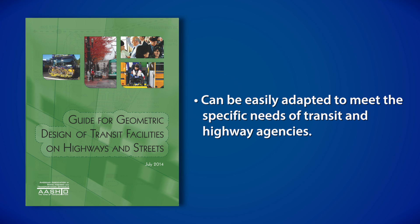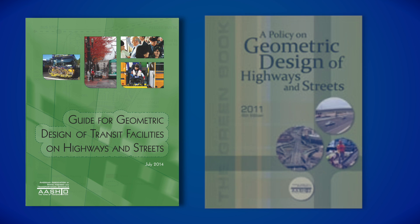The guide is intended to be used in conjunction with the AASHTO publication, A Policy on Geometric Design of Highways and Streets, 6th Edition, which is commonly referred to as the AASHTO Green Book.